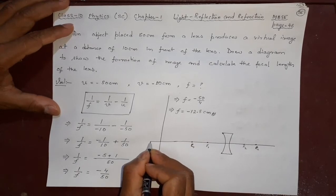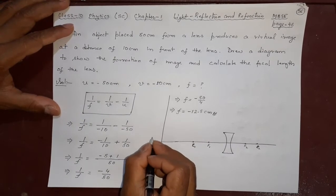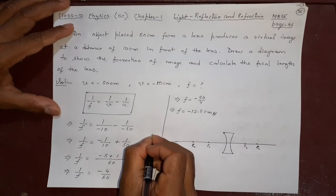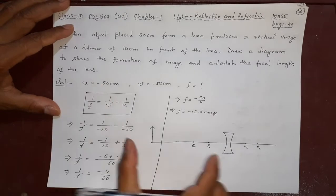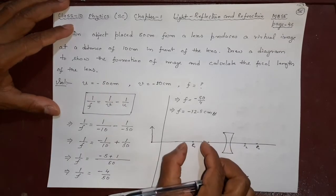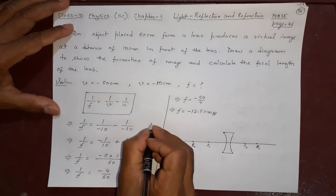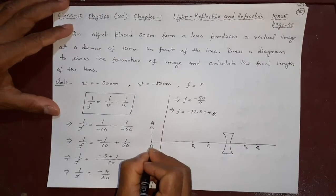This is the object. How far is the object? 50 centimeters. This is 10, 20, 30 like that, it will be 50, not very accurate but it will be okay. Now after this what will happen?